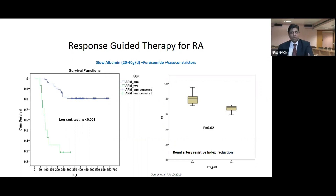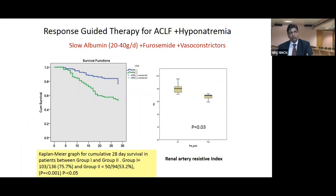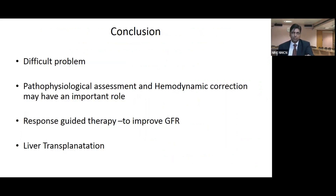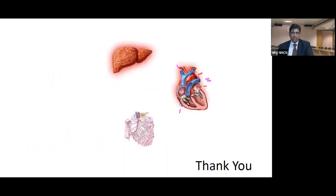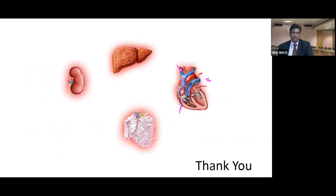The same combination was used in patients with acute-on-chronic liver failure, again showing significant improvement in survival and renal artery resistive index. The ACLF group had 136 patients, compared to 94 patients in the SMT group who did not achieve the slow albumin-furosemide combination. In conclusion, dilutional hyponatremia is a difficult problem to treat. Pathophysiological assessment and hemodynamic correction may have an important role in therapy. Response-guided parameters to improve GFR and urinary sodium may help. Liver transplant is the final answer. It is not the liver alone — it is a combination of liver, hemodynamics, gut permeability, bacterial translocation, and reduced renal perfusion that impacts hyponatremia.